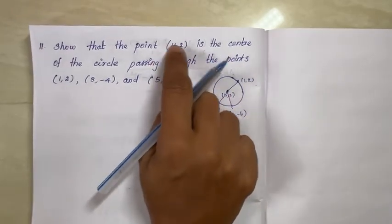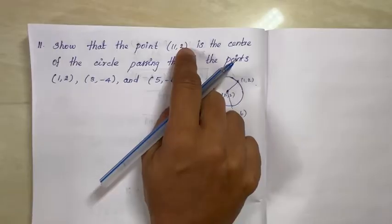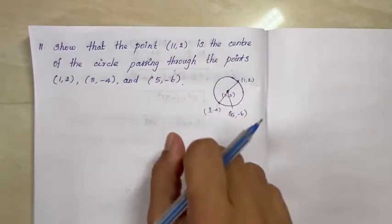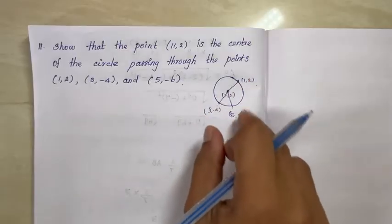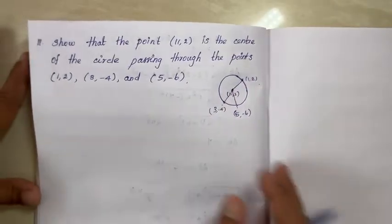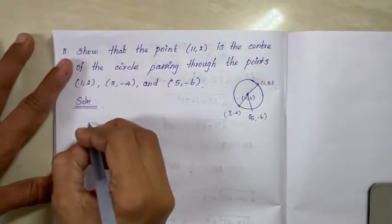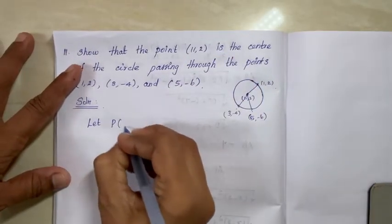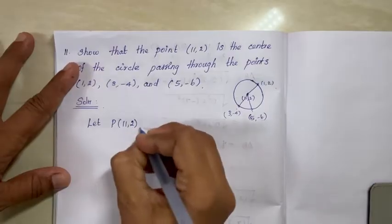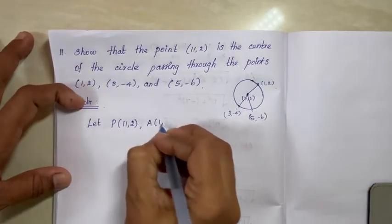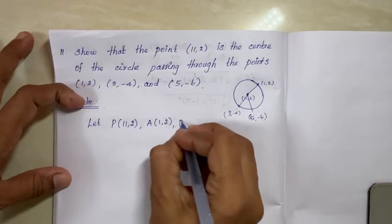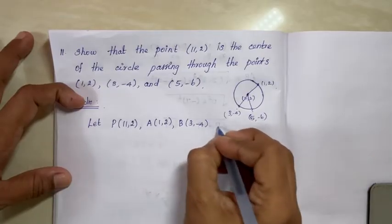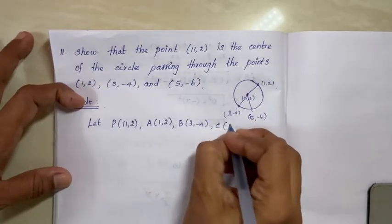Let point P be (11,2), A be (1,2), B be (3,-4), and C be (5,-6). We need to show that AP, BP, and CP are all equal, meaning P is the center of the circle passing through A, B, and C.